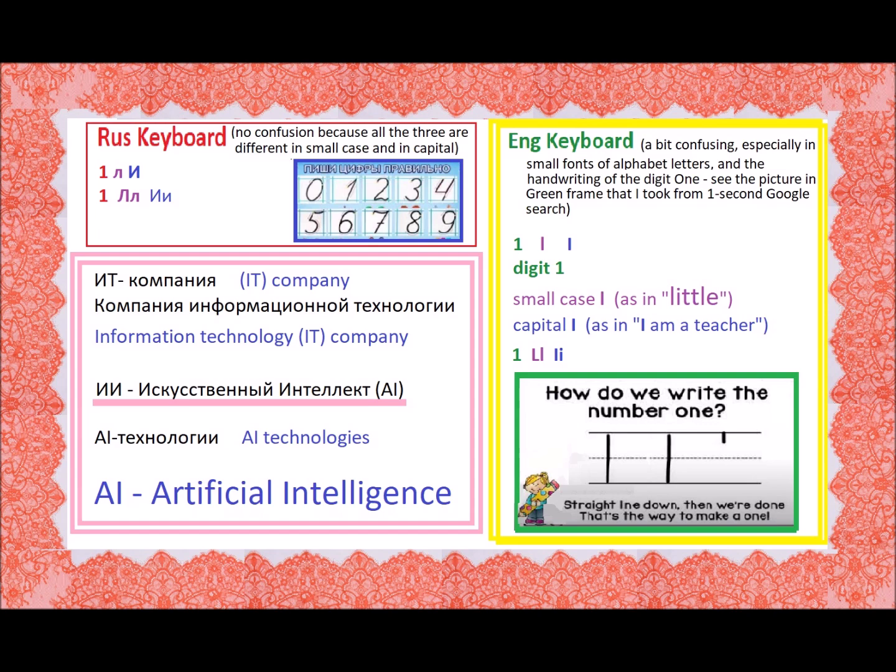It is obvious that the science of AI is very competitive in the world today because it is closely connected with power, control, computers, human beings, and other such important topics of discussion. Definitely Russian people will benefit here to see these few terms and will figure out themselves what I'm talking about here.